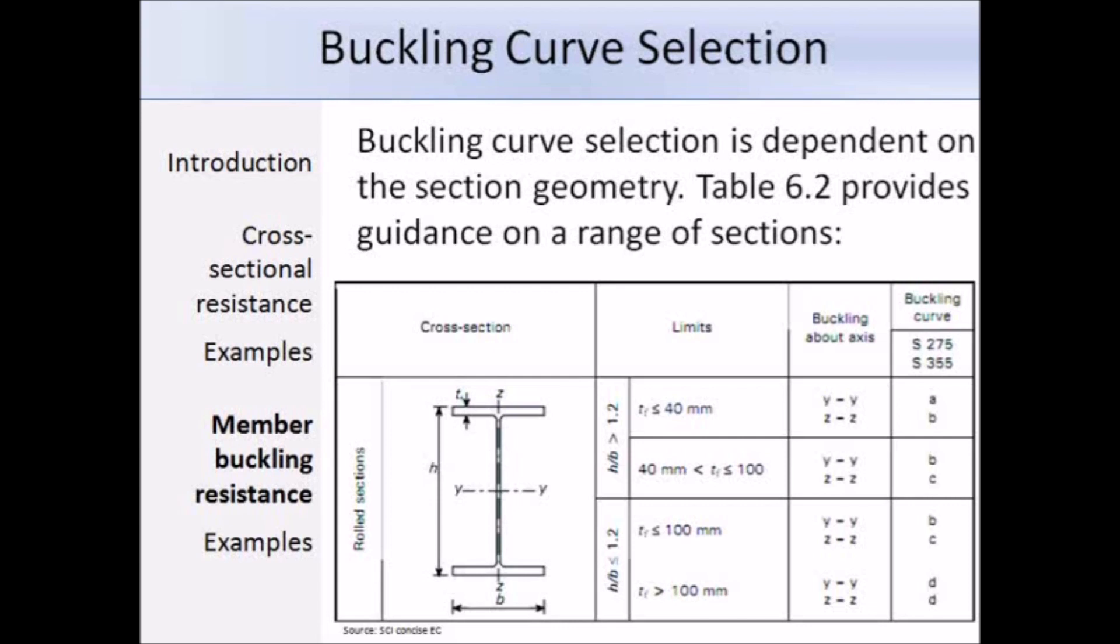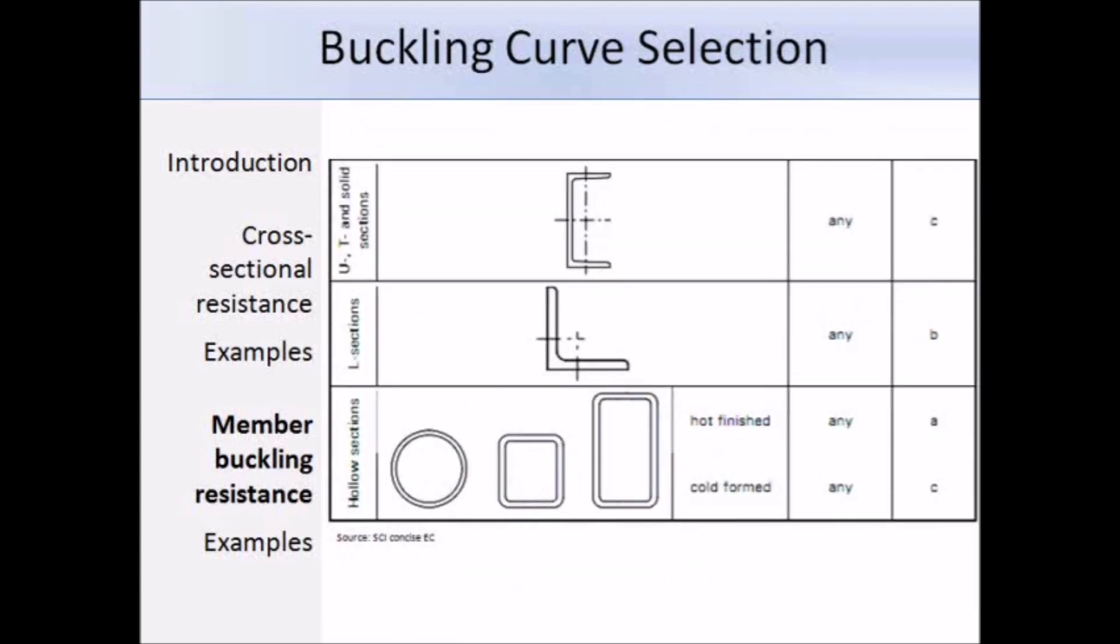This is showing you some other sections from table 6.2. If you have a U, T, or solid section, you use curve C. L sections use curve B, and hollow sections use curve A or C depending on the finish.